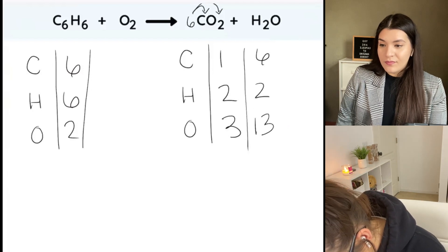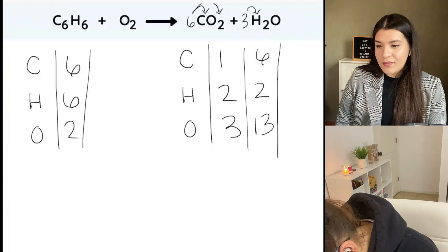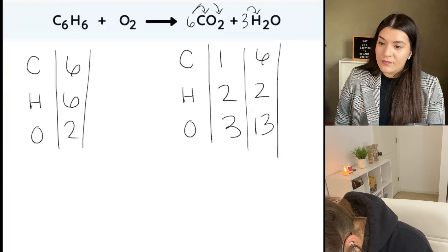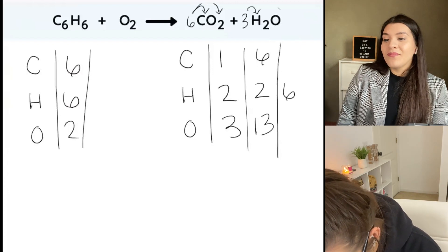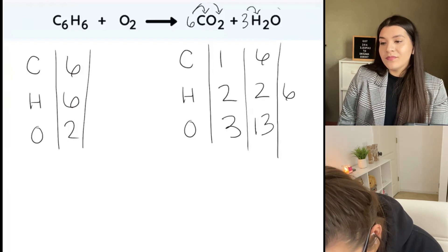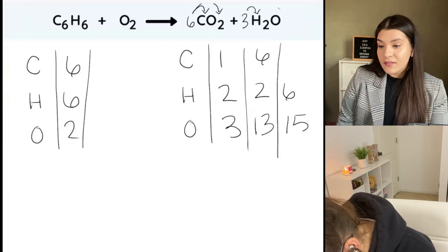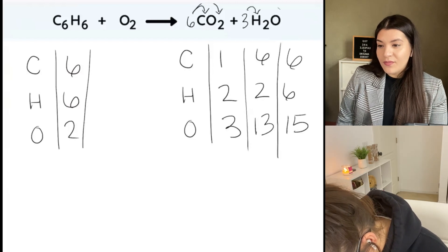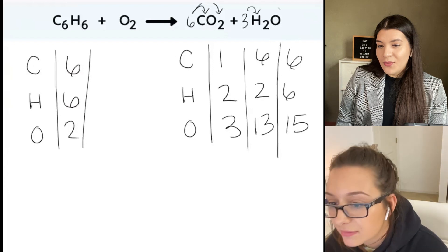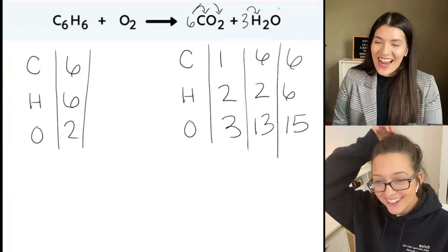So now we need to multiply the H2O by three. Three times two is six. And we're doing just three times one, so there are now three oxygens here plus the twelve — fifteen. Exactly. And this stays the same. Okay, what now? Fraction, I guess. Fraction, exactly.